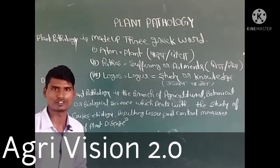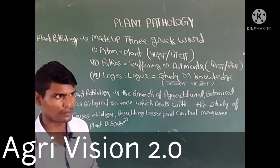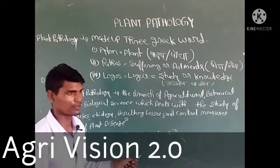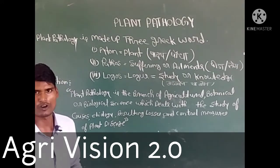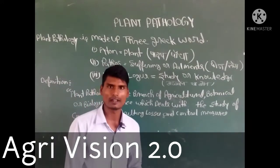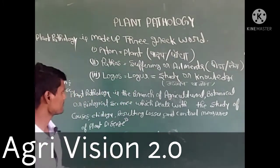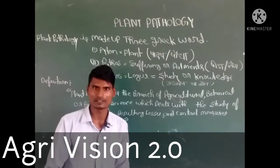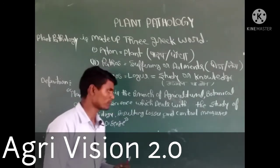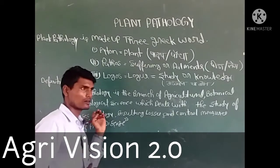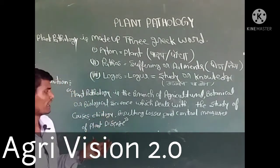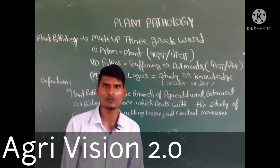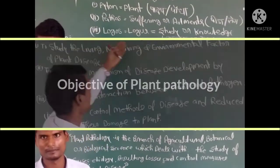Plant pathology is the branch of agricultural, botanical, or biological science which deals with the study of causes, etiology, resulting losses, and control measures of plant disease. कहने का तात्पर्य यह है कि plant pathology, agricultural या botanical या biological science की वह शाखा है जिसमें पादप रोगों के रोग कारक, रोग निदान, उसके परिणामस्वरूप होने वाले losses तथा disease को control करने के उपायों के बारे में अध्ययन करते हैं।